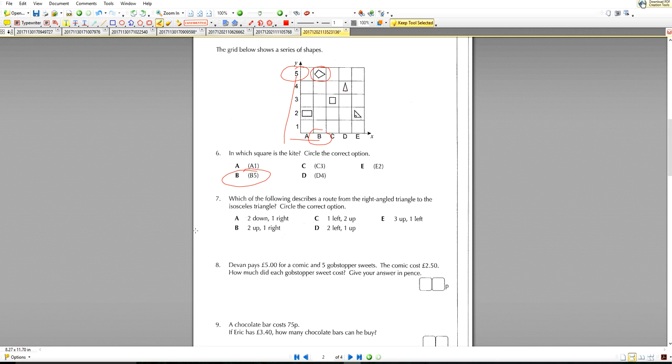Question number seven. Which of the following describes the route from the right angle triangle? Let's get our rubber and get rid of this. We need to make that nice and clean to explain to you what we're doing next. We need to know how to get the right angle triangle to the isosceles. So how does this get from here to there? Two down, if you go down you're going to be in the wrong place. Question B, two up, you go two up it'll be there. And then one right will be off the grid. So that's no good either. Let's try C. It says one left. One left, you end up here. Two up. Correct. That's the one. C is the one.